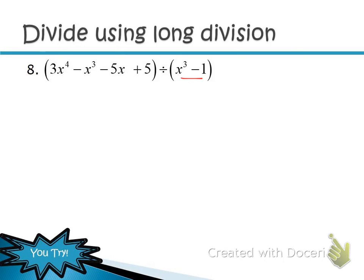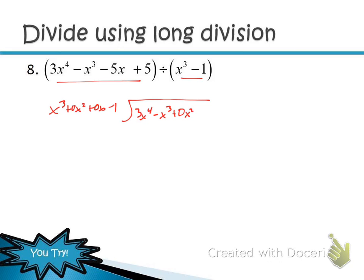For the student practice problem, you're missing terms from both the divisor and dividend. Fill those in: x³ + 0x² + 0x − 1 for the divisor, and 3x⁴ − x³ + 0x² − 5x + 5 for the dividend.